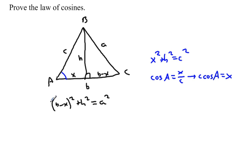And let's simplify this b minus x. So we know squaring something means multiplying it by itself. So b minus x times b minus x gives us b squared minus 2bx plus x squared. And then I'll bring down the plus h squared equals a squared.